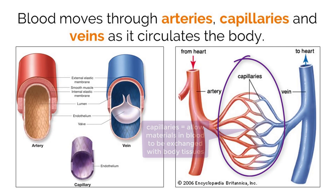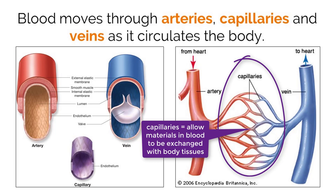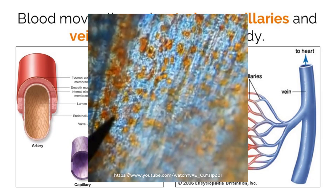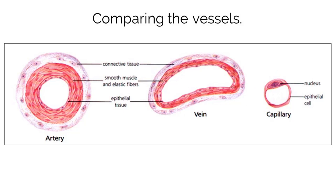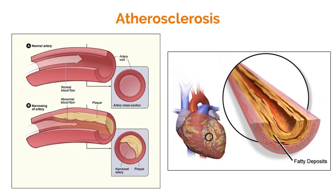Capillaries are structures that connect arteries and veins and allow materials like oxygen to be exchanged with surrounding cells and tissues. Capillaries are one cell thick and so small that only one red blood cell can move through them at a time — this is needed for gas exchange. Here is a video of blood cells moving through capillaries in the tail of a goldfish. Take a minute and write down observations about these structures.